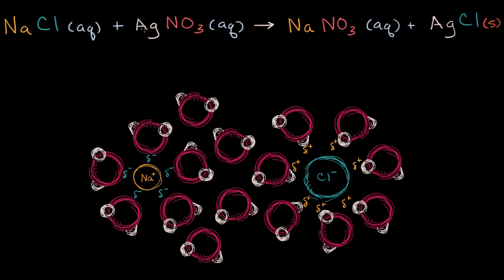The same thing is going to be true of the silver nitrate. The silver ion, once it's dissociated, is going to be positive, and the nitrate is a negative — it is an anion. In order to better convey the dissociation of the ions, we could instead write the equation like this.